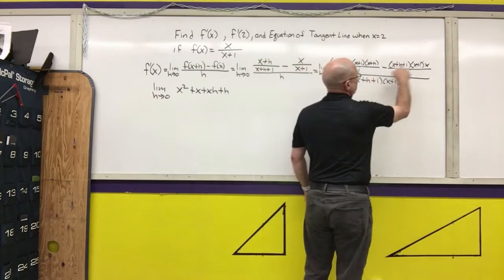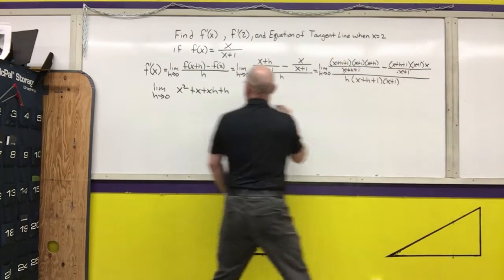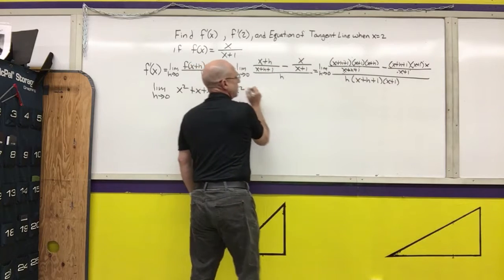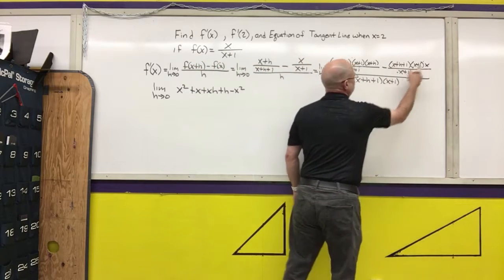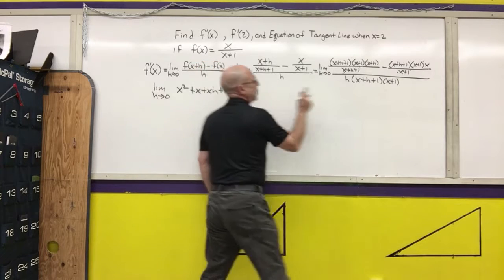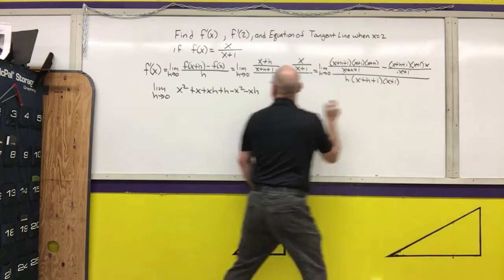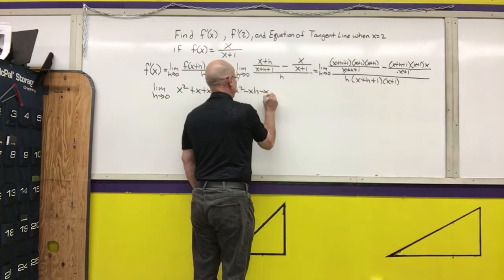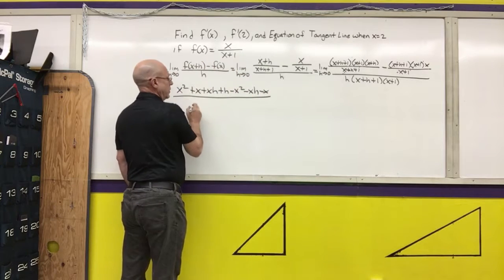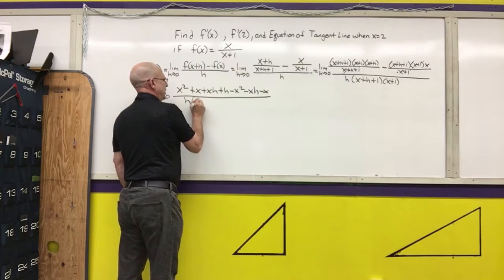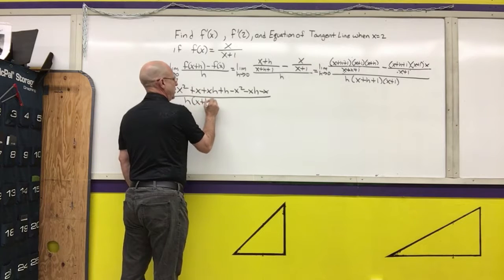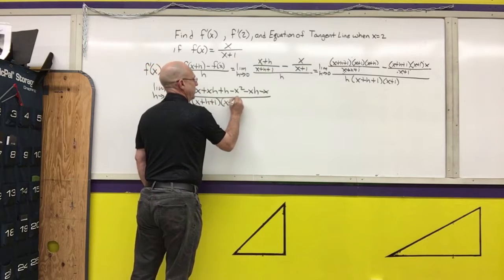Minus x squared minus xh minus x, all over h times x plus 1 times x plus 1.